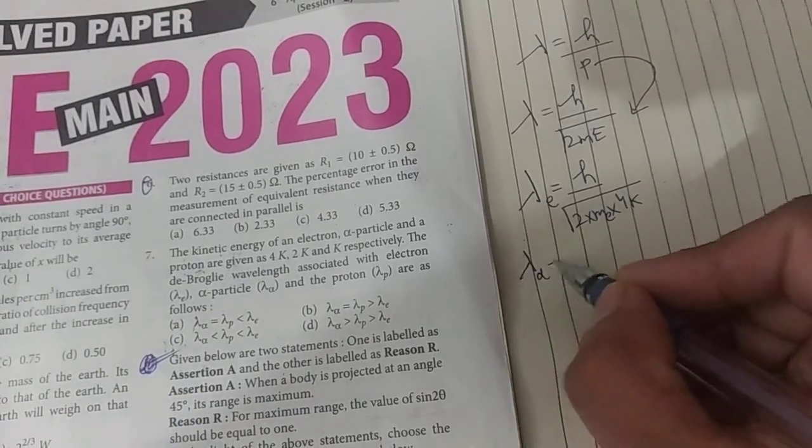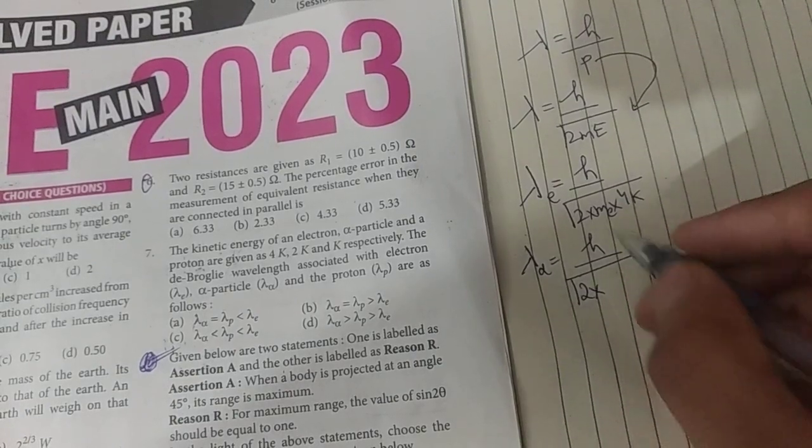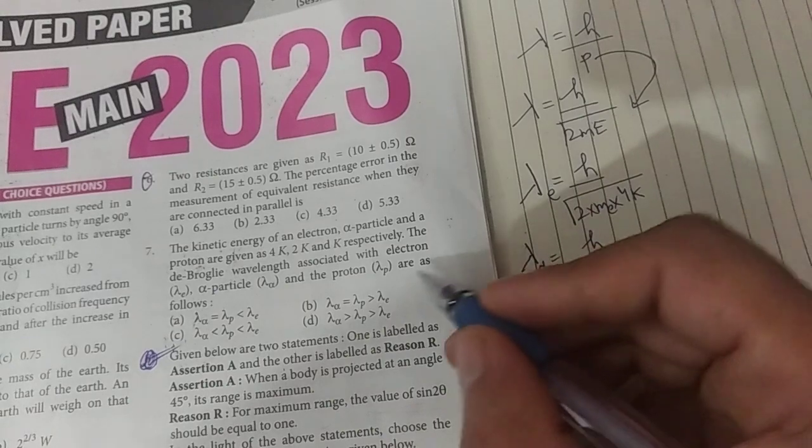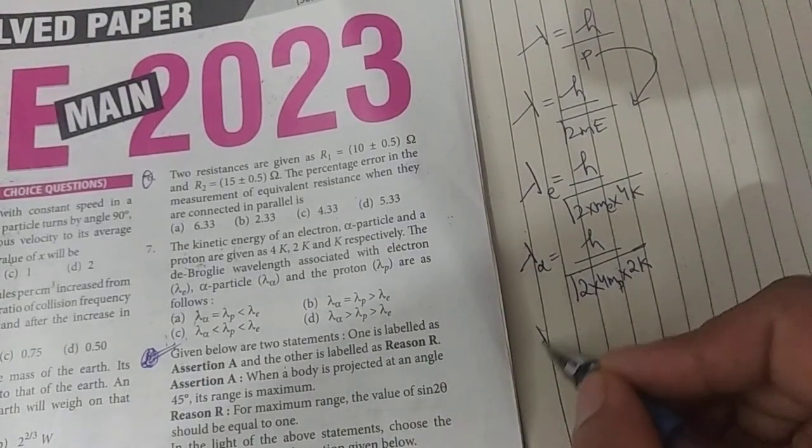Then I will write alpha particle de Broglie wavelength. Lambda is equal to h upon root 2 into alpha particle mass, which is 4 times mass of proton, multiplied by kinetic energy which is 2k. So that is the de Broglie wavelength for alpha.